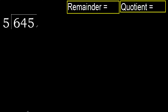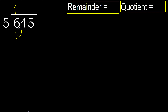645 divided by 5. 6 is not less, therefore with 6: 5 multiplied by which number is nearest to 6 but not greater? 5 multiplied by 2 is 10 — 10 is greater. Multiply by 1: 5 is not greater. Subtract. Next.